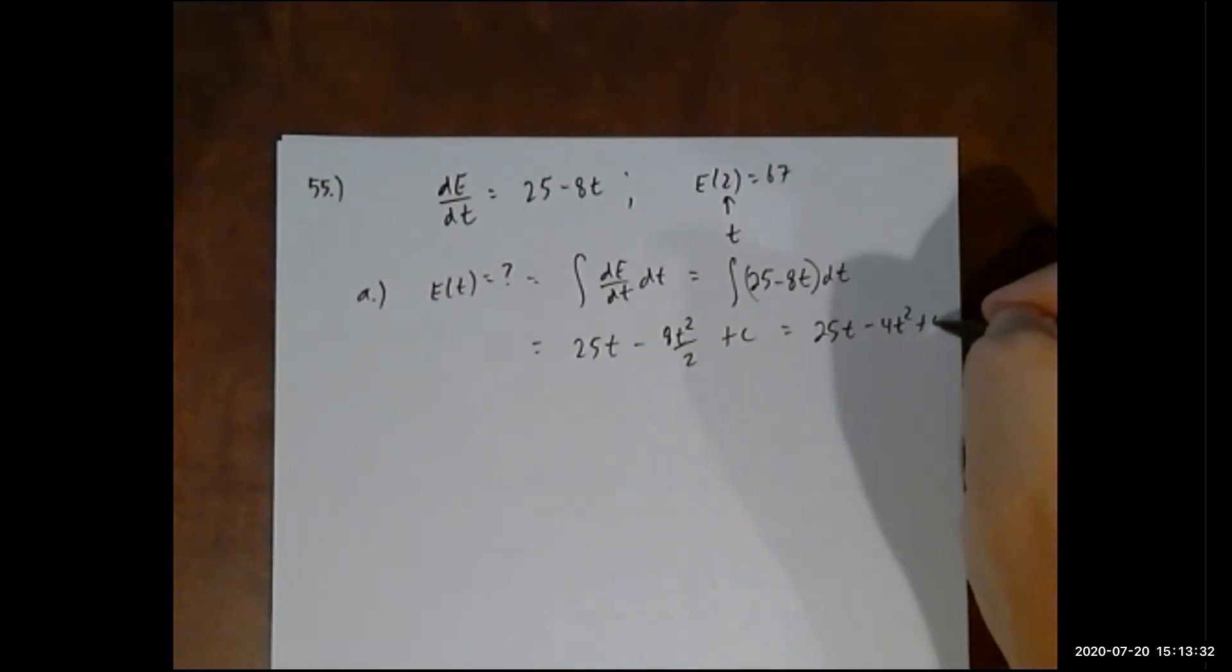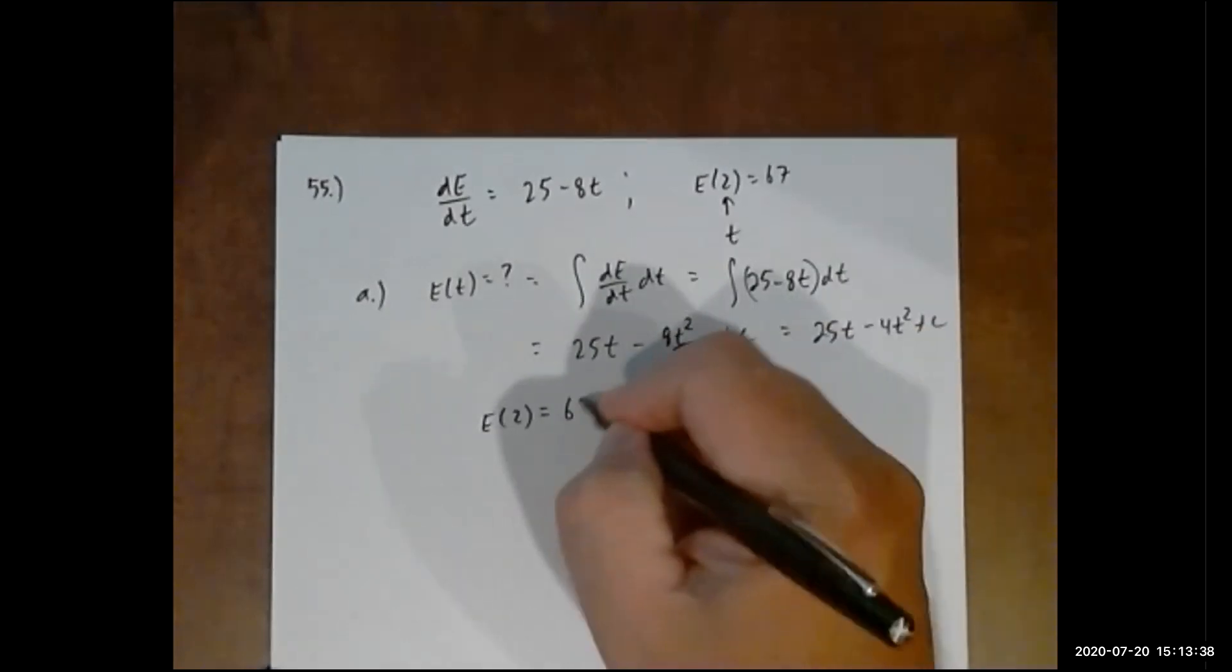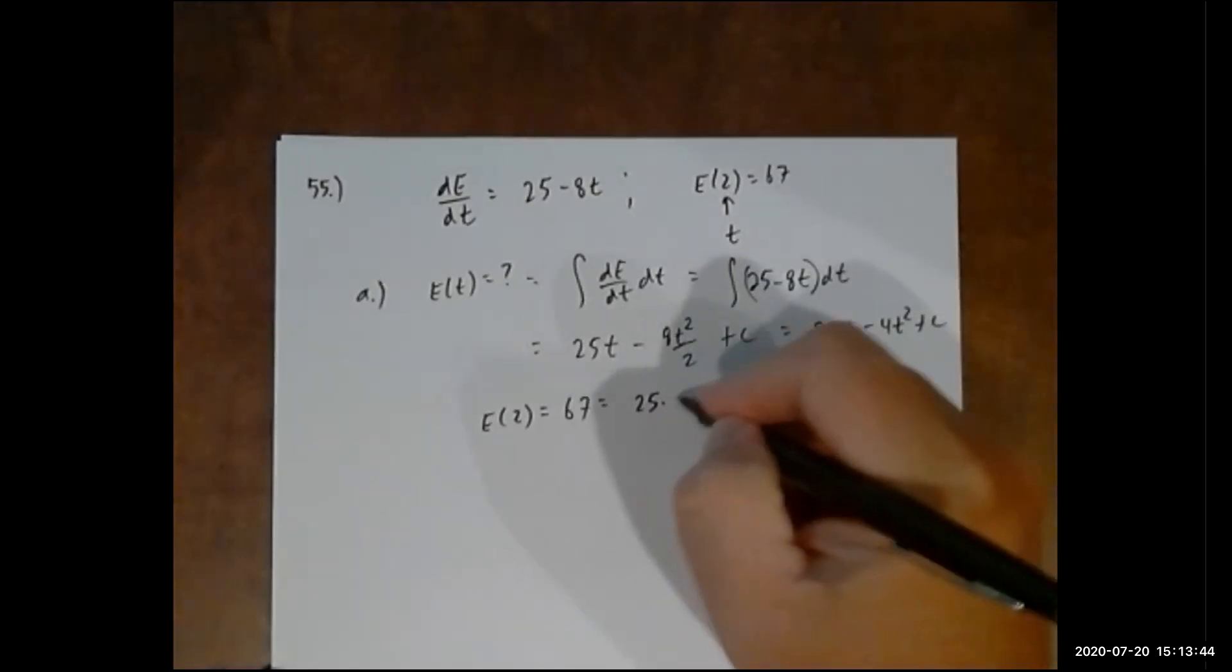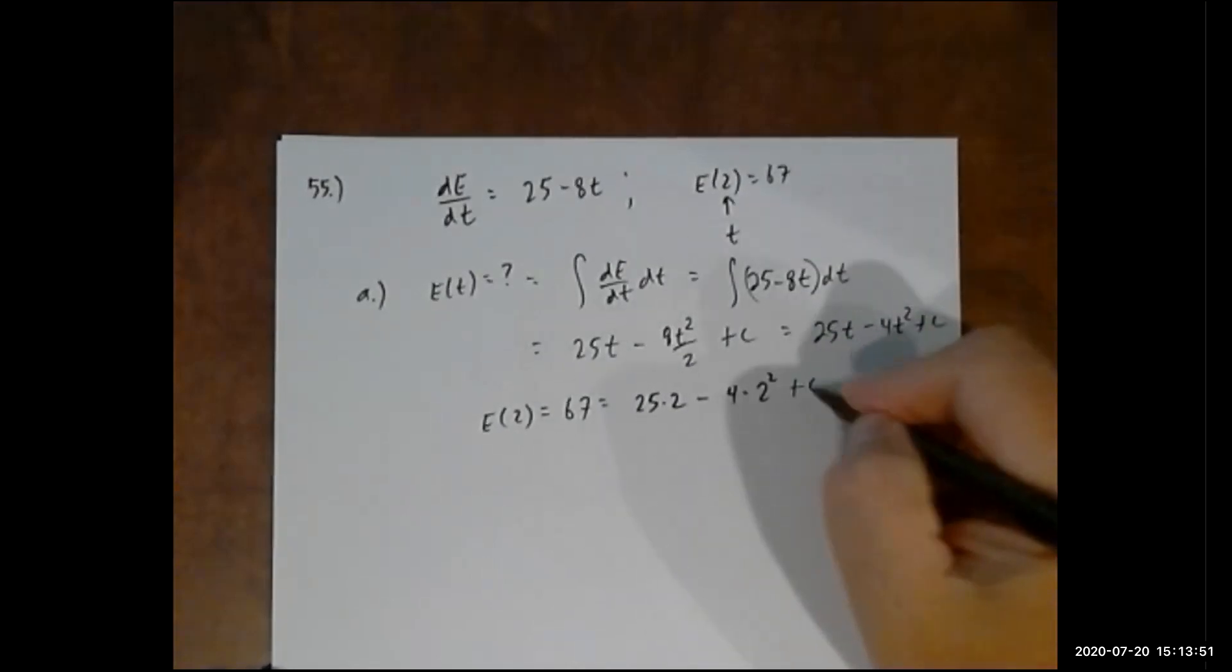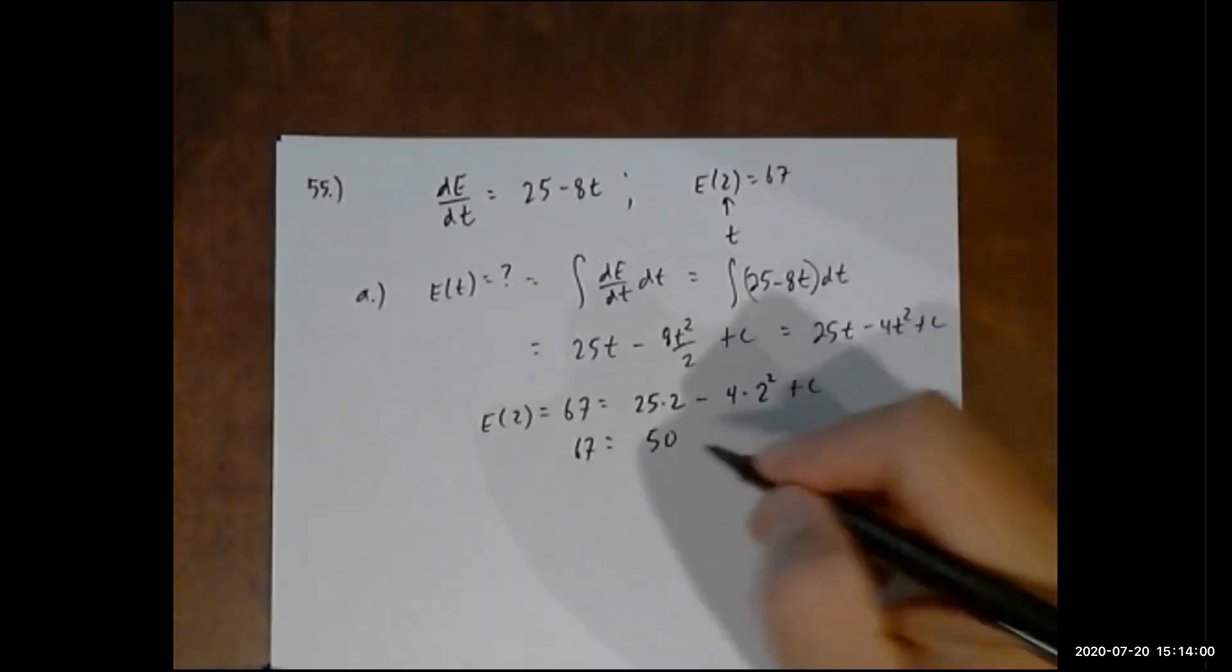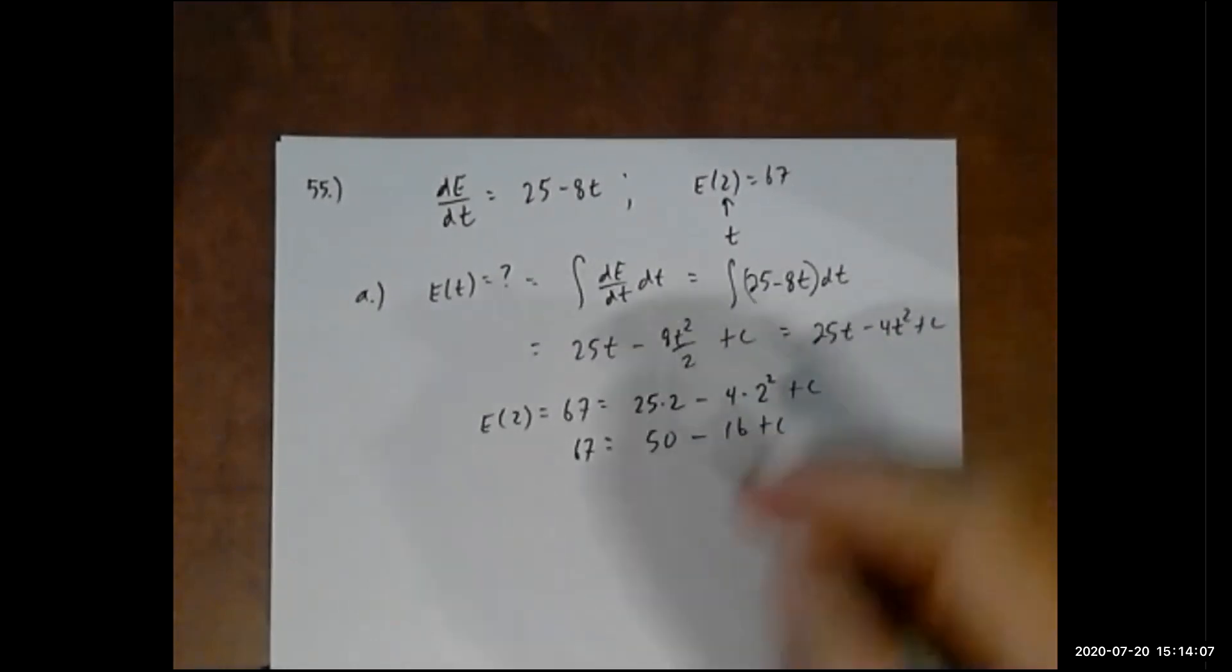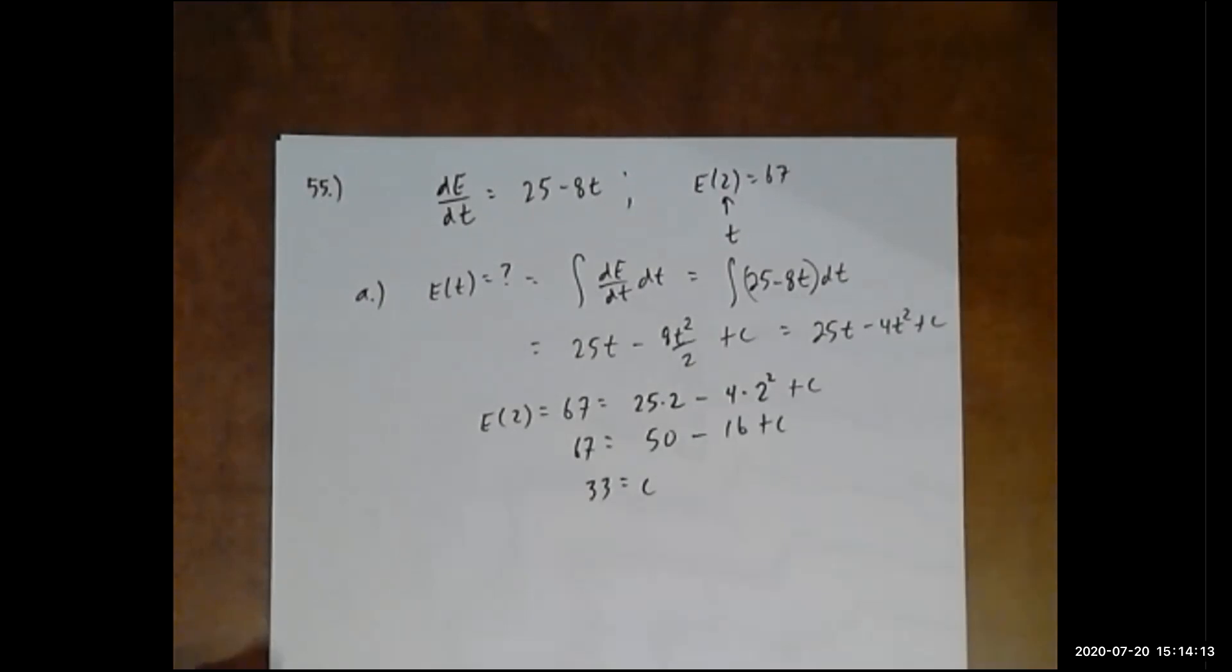If I simplify this, 25t minus 4t squared plus C. Now I can figure out what C equals because we were told that E(2) is 67. I plug 2 in for t: 25 times 2 minus 4 times 2 squared plus C. 67 equals 50 minus 16 plus C. This is 34, so C is 33.